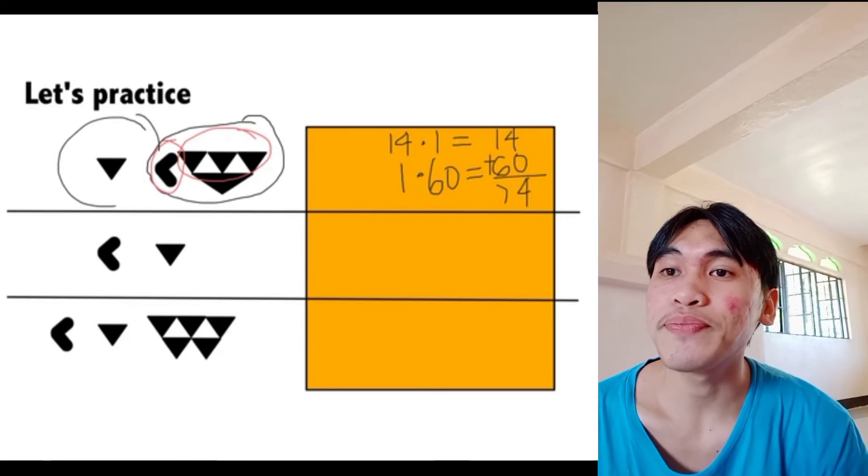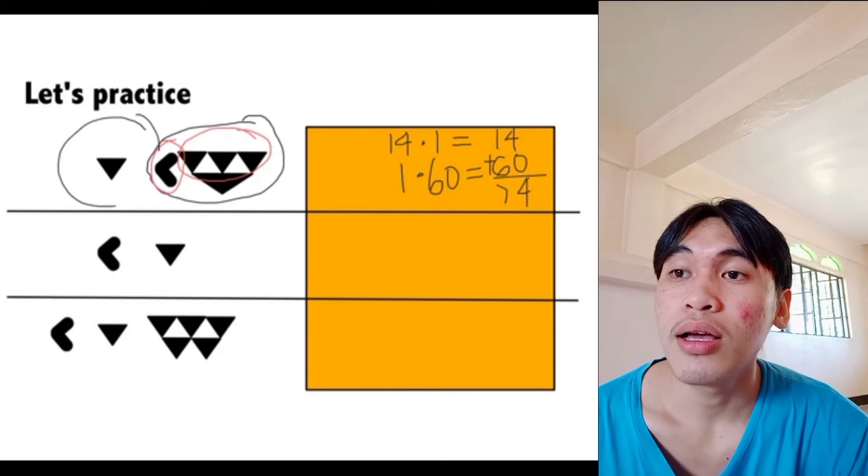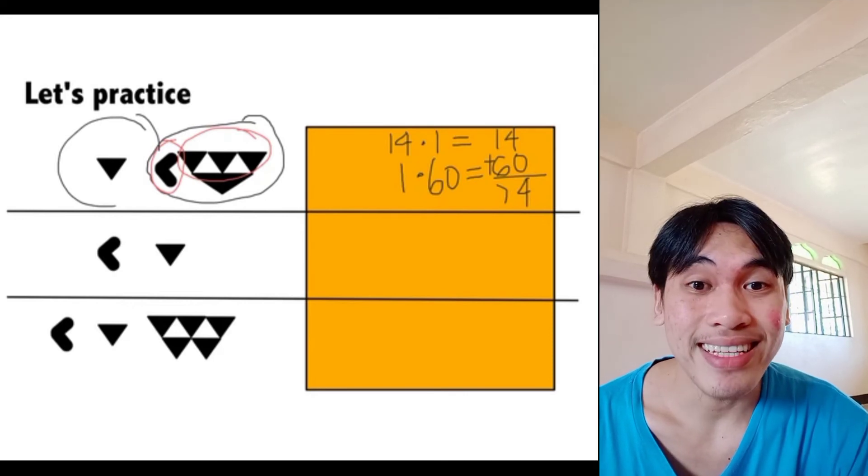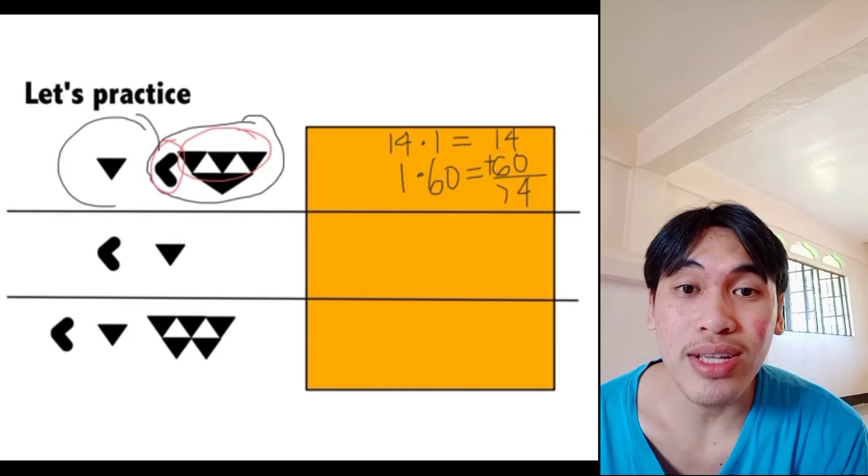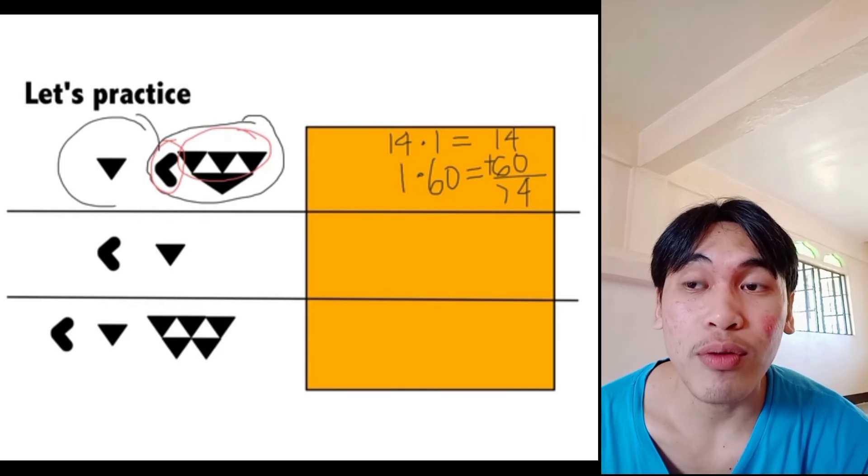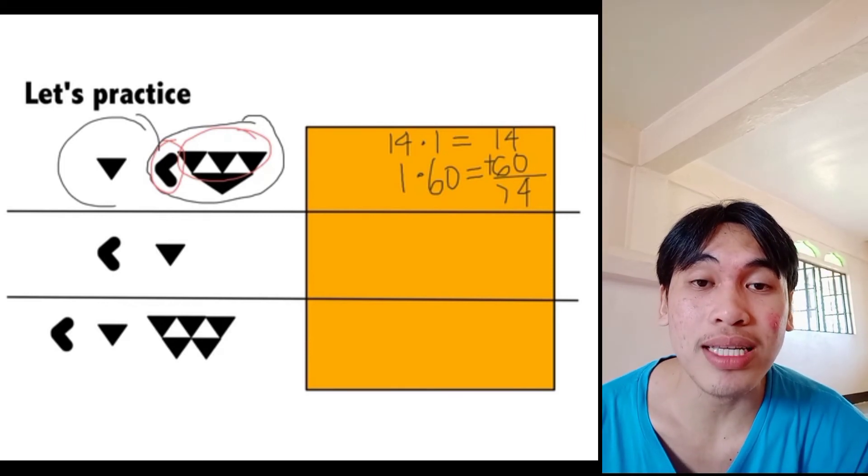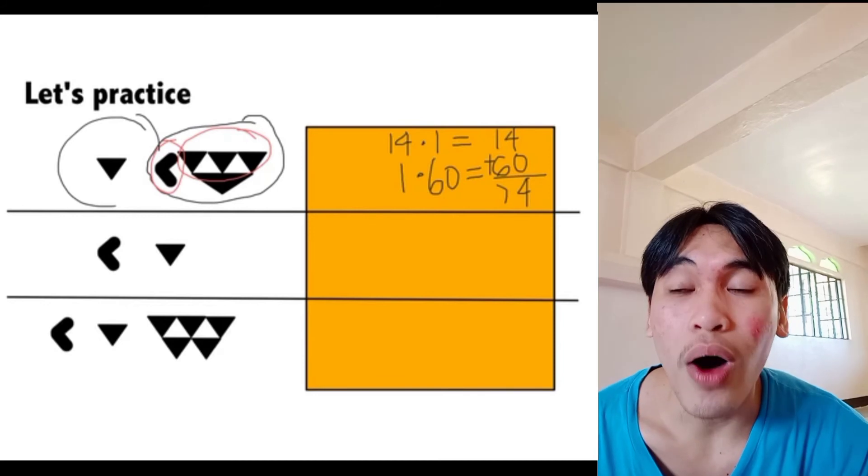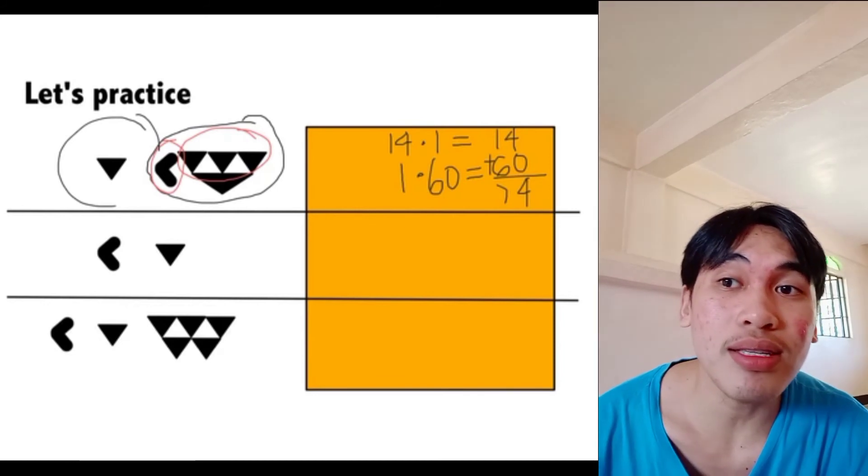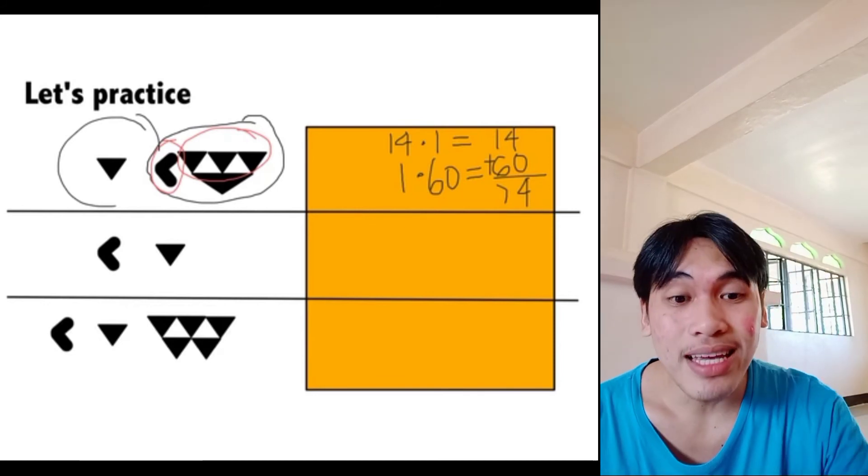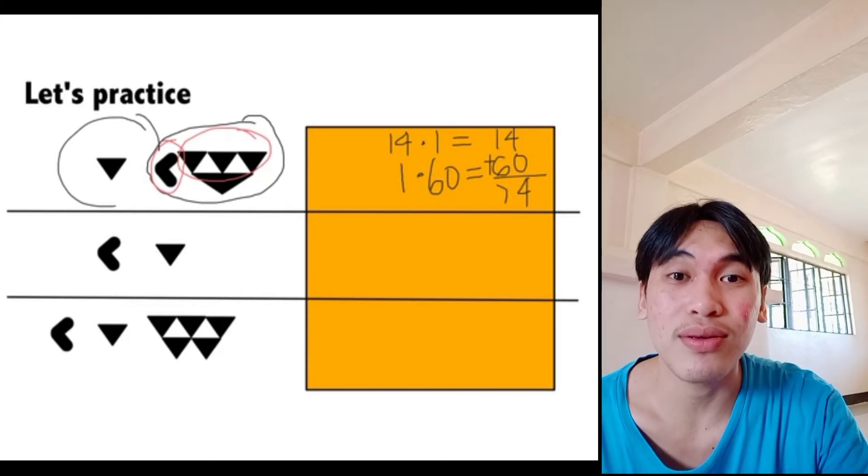The next is the 1 triangle downward. Since we have put space on it, so it is times 60. 1, that is 1, times 60 is 60. So, 60 plus 14 is 74.